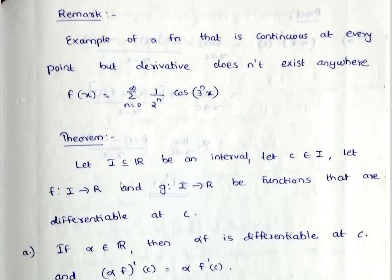Next, the algebra of differentiable functions. If f and g are differentiable, then f plus g, f minus g, alpha times f, f times g, and f divided by g are also differentiable. Formally: let I be a subset of R, an interval, let c be in I, and let f and g from I to R be functions that are differentiable at c.